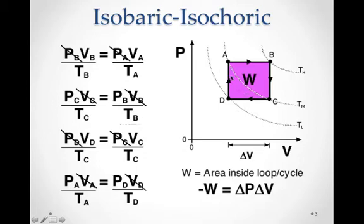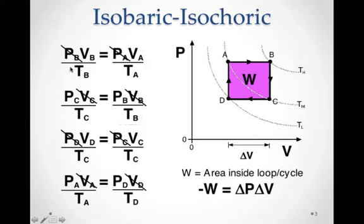In this particular cycle, we start out at A and want to go to B. Let's say we don't know the temperature at location B, but we know the volumes at locations A and B, and we know the starting temperature at position A. We can use the ideal gas law proportion to find the temperature at location B. Because this is an isobaric process from A to B, the pressure remains the same, so the pressures cancel. Knowing the two volumes and the starting temperature, we use algebra to solve for the temperature at point B.